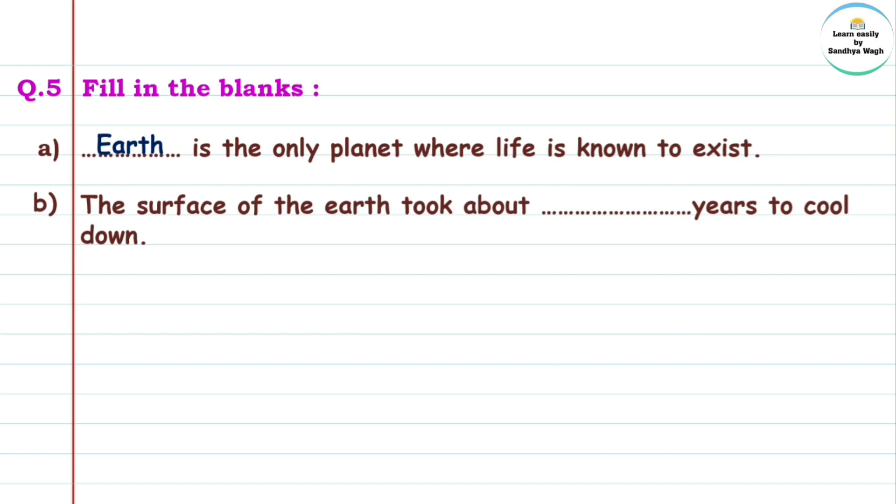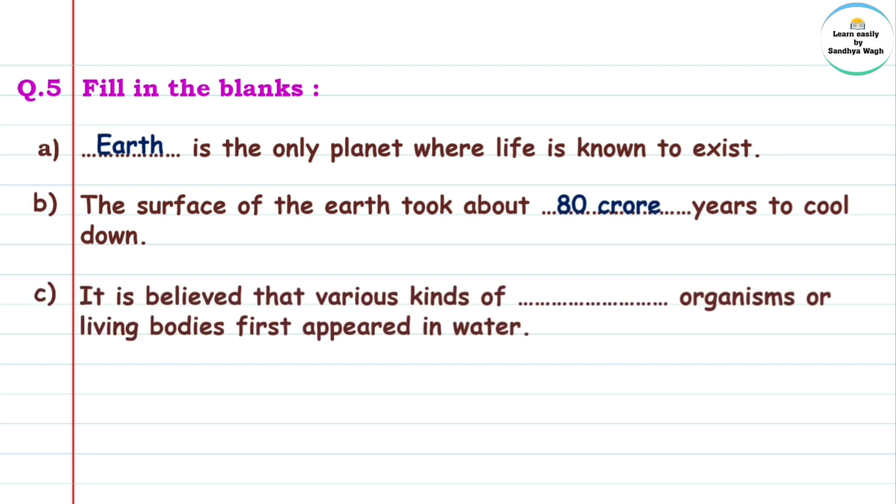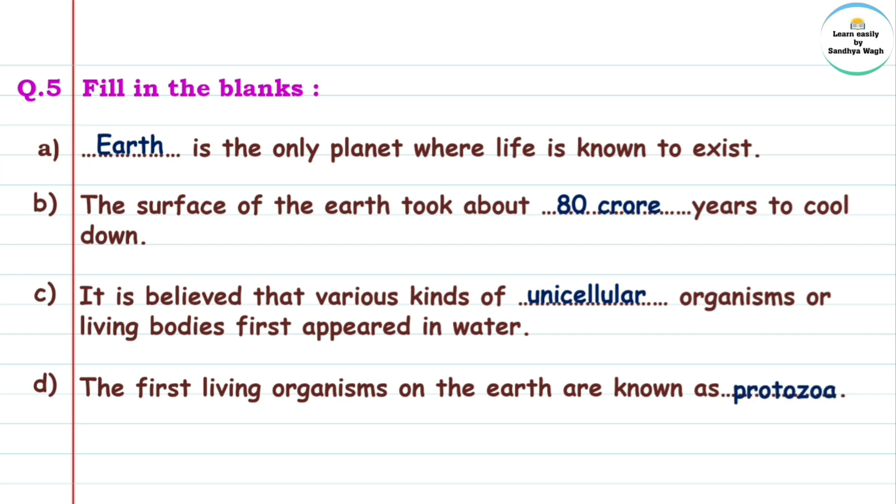Question 5: Fill in the blanks. Earth is the only planet where life is known to exist. The surface of the Earth took about 80 crore years to cool down. It is believed that various kinds of unicellular organisms or living bodies first appeared in water. The first living organisms on Earth are known as protozoa. We need a microscope to see the protozoa.